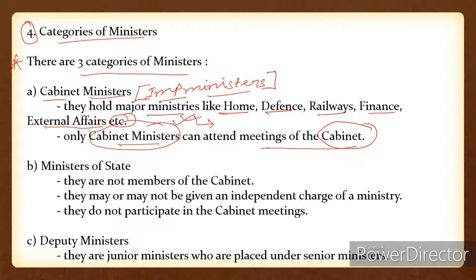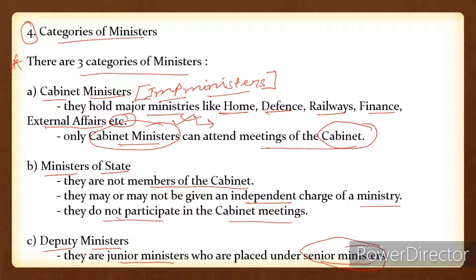The second category of minister is Ministers of State. They are not members of the cabinet. They may or may not be given an independent charge of a ministry, and they do not participate in cabinet meetings. Then the third category is Deputy Ministers. They are junior ministers who are placed under senior ministers — for example, a deputy minister appointed under the Home Minister.